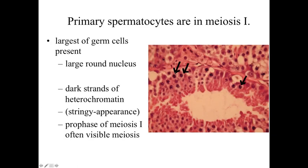The spermatogonia are going to divide, and some of the products are going to be pushed up into the seminiferous epithelium and become primary spermatocytes. The primary spermatocytes are going to be the most prominent of these developing spermatogenic cells. They're going to be relatively large cells with a large round nucleus and almost a patchy or strand-like appearance to the heterochromatin — sometimes a stringy appearance — because in some cases you can actually see the chromosomes condensing as these cells go through meiosis. The primary spermatocytes are going to be in meiosis I, essentially preparing to become haploid cells.